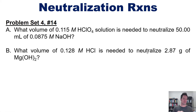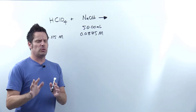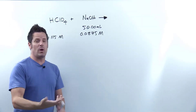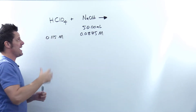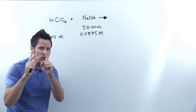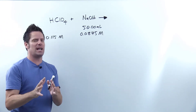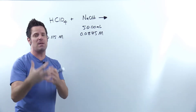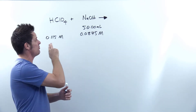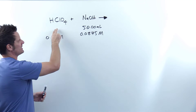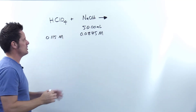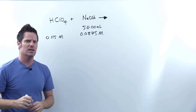I invite you to attempt these both on your own, after which I will show you how to do part A. To tackle this question, we have to start by writing out a chemical reaction. I'm taking this strong acid — perchloric acid — which is one of the seven strong acids my university students must memorize (the name and formula, linked in the description below), and reacting it with the strong base sodium hydroxide.